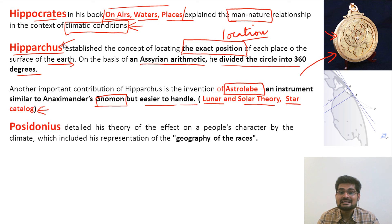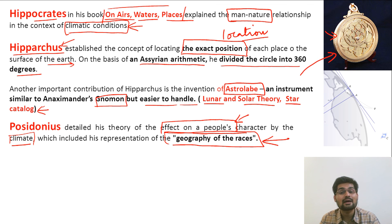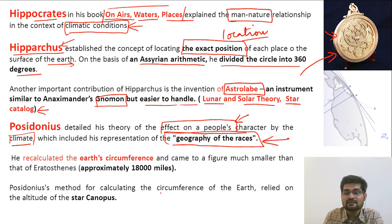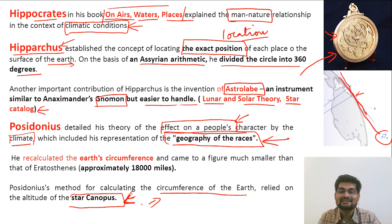Posidonius is important because he categorized the effect of climate on people, classifying it in terms of the geography of races — examining how races formed and what influence climate had. He also recalculated the Earth's circumference, arriving at approximately 18,000 miles. Additionally, he developed an innovative method using the position of the star Canopus and the rule of tangent to calculate the Earth's circumference, which stands as another major contribution among Greek scholars.